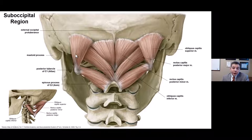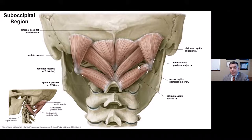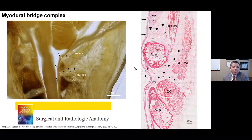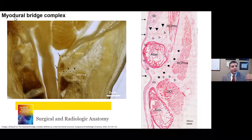The muscles overlying the region are the famous suboccipital muscle group, very heavily associated with C1 and C2. On C2's bifid spinous process and C1's posterior tubercle, we can see rectus capitis posterior minor and major, obliquus capitis inferior, and obliquus capitis superior — forming the suboccipital triangle. In addition to the ligaments, these muscles are also important in keeping the cranial cervical junction stable. This connects to rising interest in what's called the myodural bridge complex.